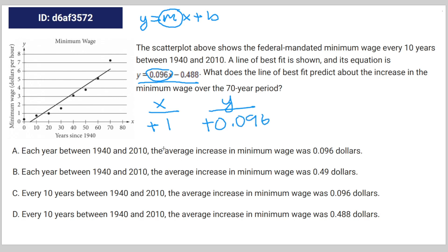In other words, every year that passes, the average increase in minimum wage will have been 0.096. Therefore, A is the correct answer.